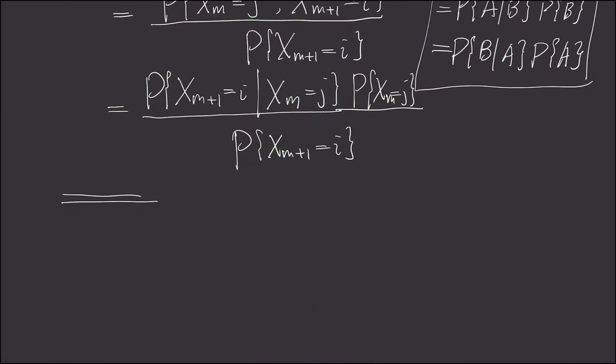Here we use the formula of the next step. We have to use the fact that this Markov chain is stationary, which means at each time step, probability distribution is the same.